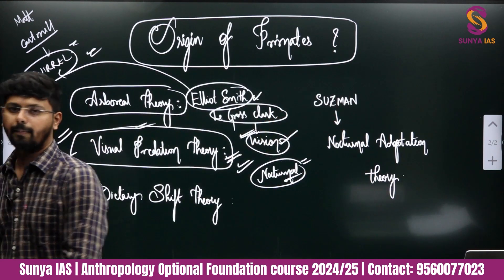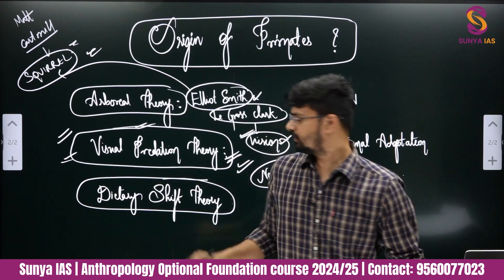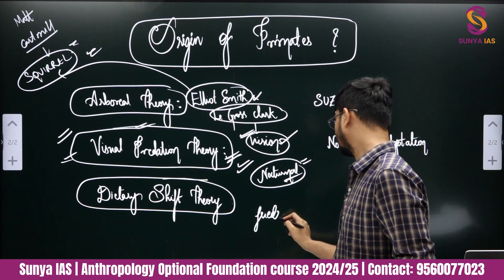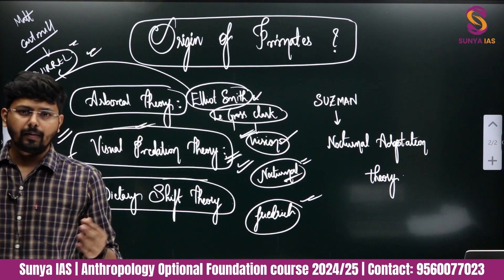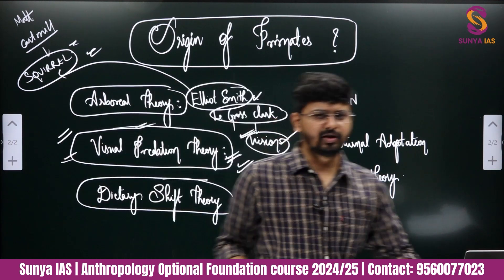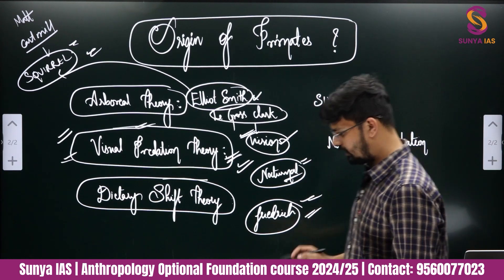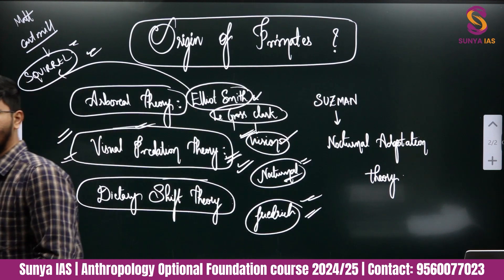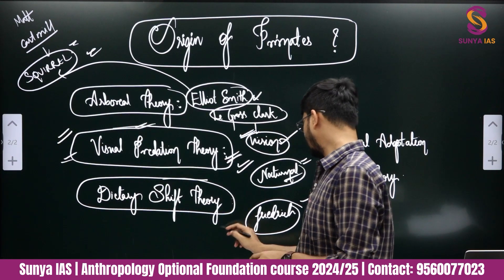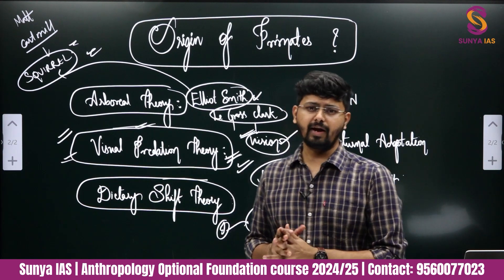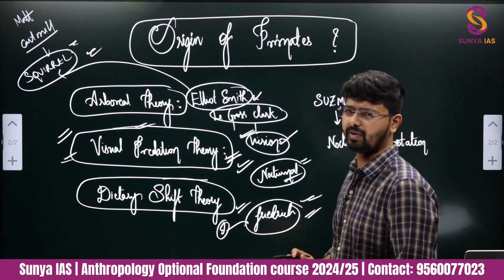This is the origin of primates according to Cartmill. Next is the Dietary Shift Theory by Friedrich. He says that mammals in the initial stage were not insectivorous in nature — rather they depended on a diet of plants and vegetation. Because of the shift in diet from insects to plants and fruits, the features of primates developed.